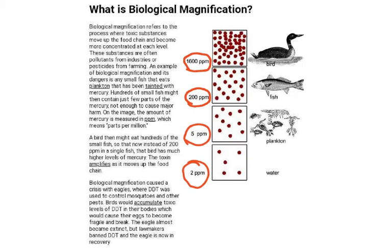Hundreds of small fish might contain just a few parts of mercury — not enough to cause major harm. But a bird that eats hundreds of those fish accumulates much higher mercury levels than a single fish contains. The toxin amplifies as it moves up the food chain. A well-known case is DDT, which was used to control mosquitoes and other pests. Birds accumulated toxic levels of DDT, causing their eggs to become fragile and break. Eagles almost became extinct, but when lawmakers banned DDT, the eagle population began to recover.